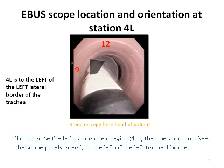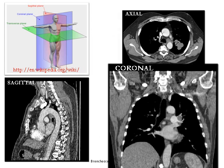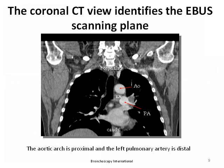Station 4L is always to the left of the left lateral border of the trachea. With the scope oriented laterally, the EBUS scanning plane correlates best with the coronal view on chest computed tomography. The coronal view correlates with the EBUS scanning plane — the aortic arch is seen proximal, and the left pulmonary artery is seen distal to the lymph node.